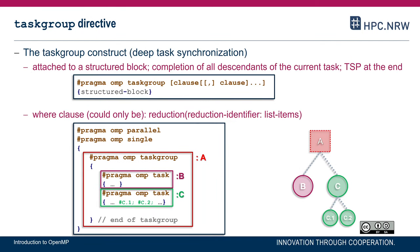The other task synchronization construct of interest is the so-called taskgroup directive. It enables deeper task synchronization because it waits for the completion of all tasks and their descendants generated in the dynamic extent of the taskgroup construct. There is a task scheduling point at the end. It also accepts a reduction clause — if you want to implement reductions with tasks, you need a taskgroup construct with a reduction clause, because it provides a well-defined point at which the task reduction can be executed.